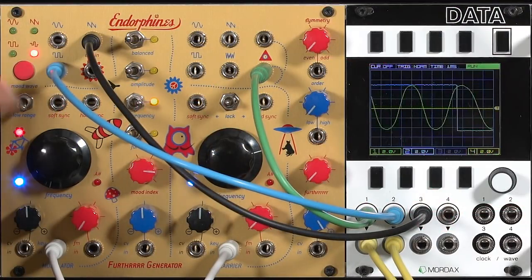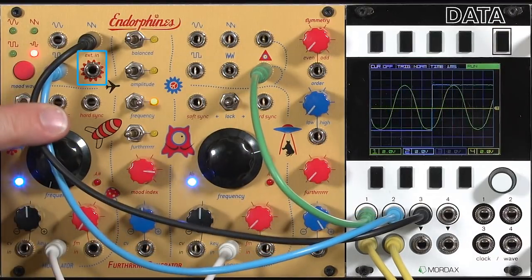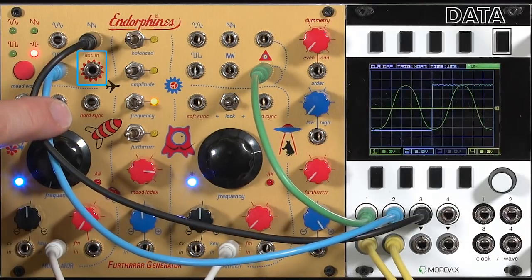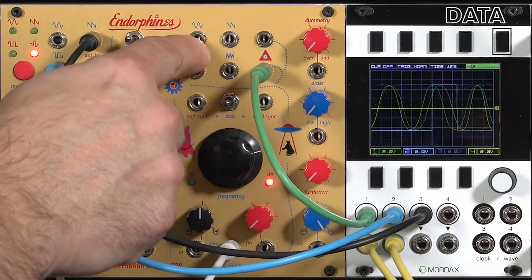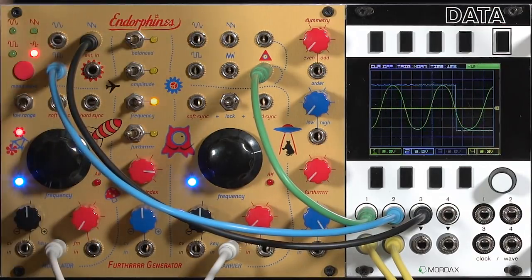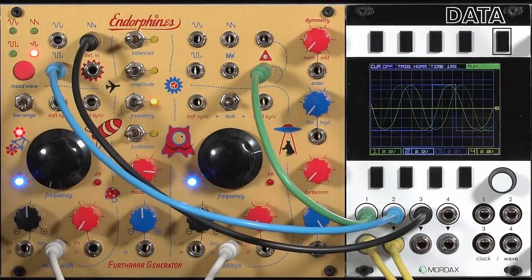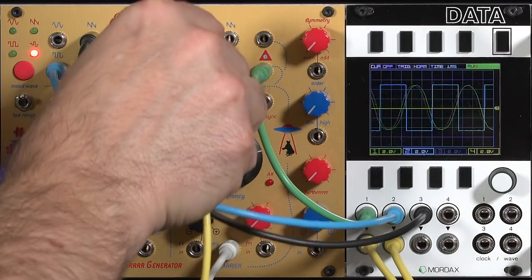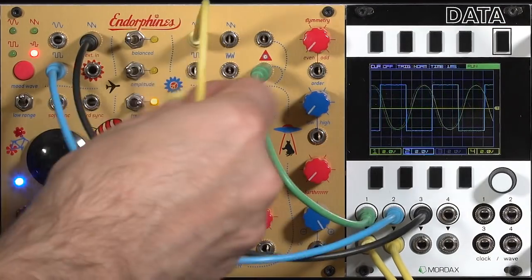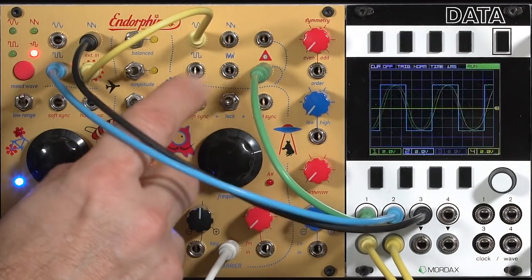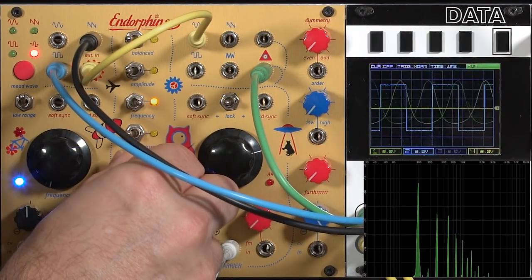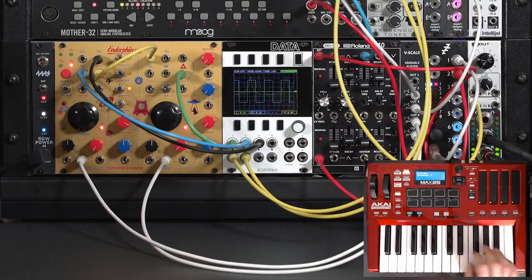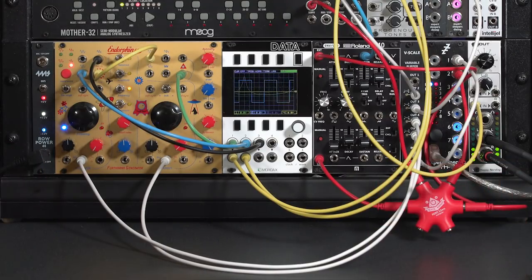You can also route a different waveform into this red star input. So you can bring in an external signal, such as another VCO. We can even do some internal patching, such as taking the carrier's waveform output, putting it back into this external input, which will then modulate the carrier. I'll grab the sine wave, feed it into that external input, increase the modulation, and now we'll have a feedback loop.